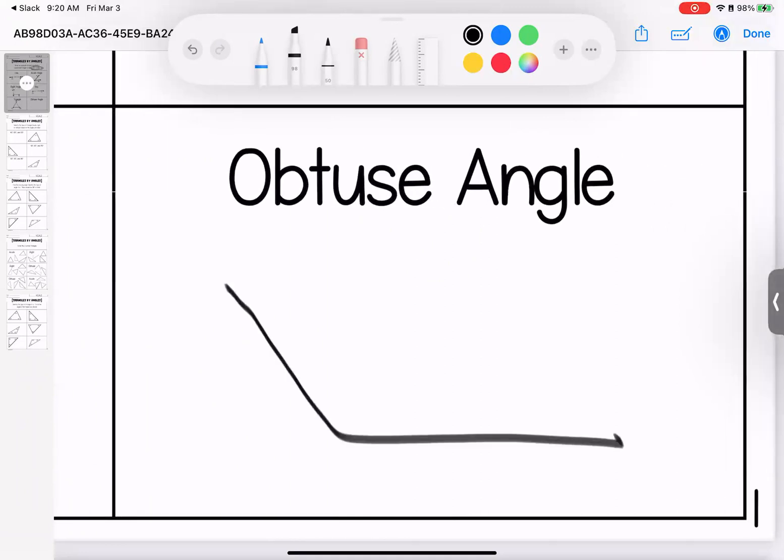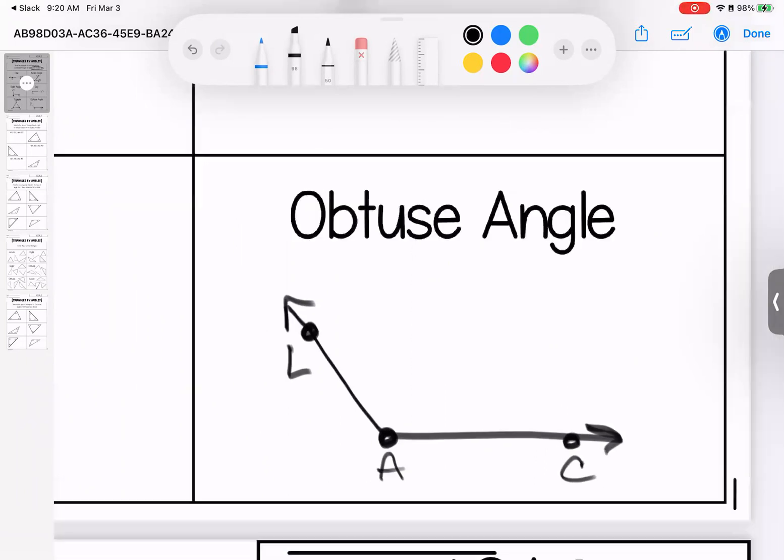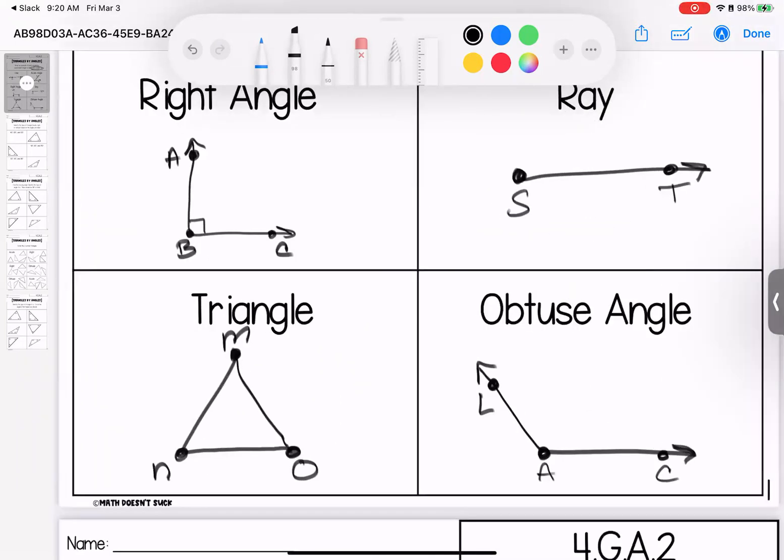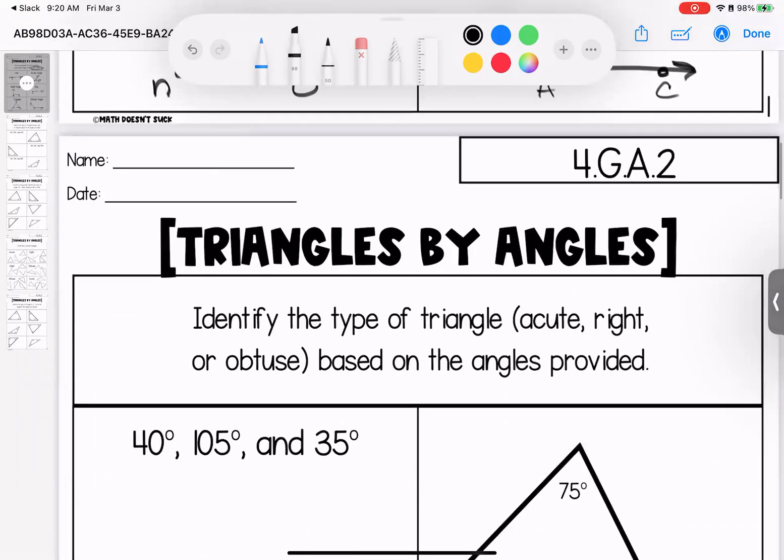An obtuse angle, a vacation angle. Imagine that you are relaxing in a hammock on the beach, and I'm going to name this angle L-A-C for Lysinski. Any questions on these, bring them with you to class.